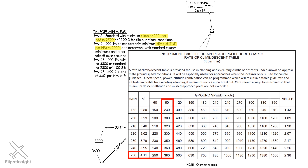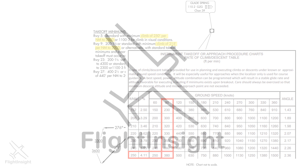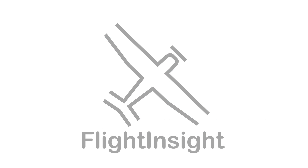In general, ground speed is useful for navigation and climb and descent angles, while airspeed is needed for aircraft performance and traffic control. Knowing how to calculate these values is important, but being able to know when to apply which to different scenarios is what true expertise looks like. For more training insights, head over to the Flight Insight website linked here or in the description.